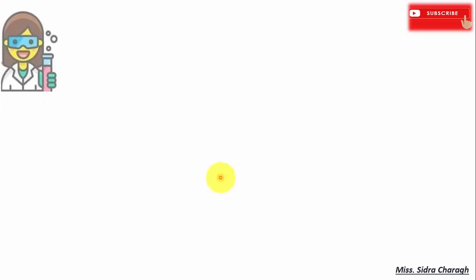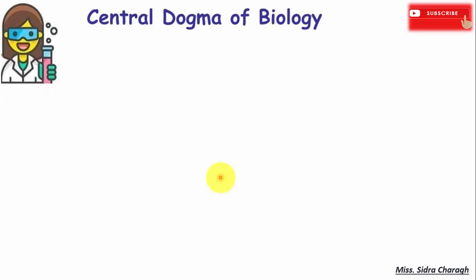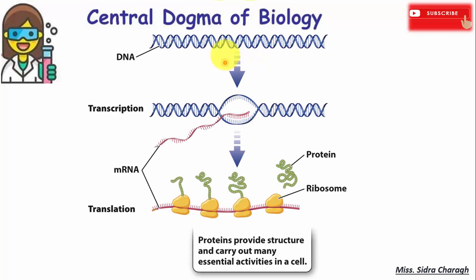Today we will discuss the central dogma of molecular biology. The central dogma of molecular biology explains the flow of genetic information from DNA to RNA and to make a functional product, a protein.